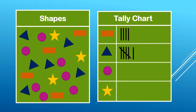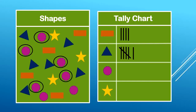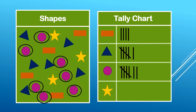Now let's count and tally our purple circles. One, two, three, four, five, six, seven. This time we need seven tallies. Remember when we do tally number five we need to cross over the first four to keep it in sets of five. One, two, three, four, five, six, seven. Seven tallies for the seven circles.